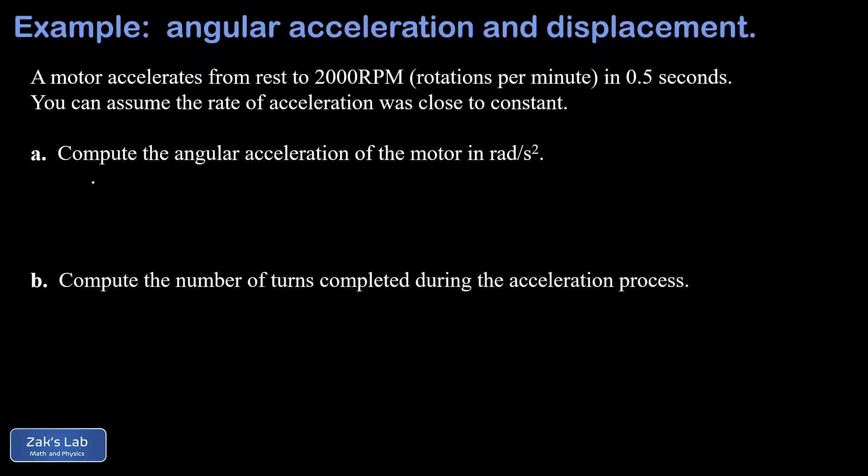We start with the unit analysis. We have 2,000 rotations per minute and we'll work on the angle first. For every one rotation we have 2π radians. Then we work on the minutes. For every minute there are 60 seconds. So we multiply the numerators together and divide by 60. We obtain a final angular velocity of 209.4 radians per second, keeping a little extra precision than usual since we're just at the beginning of the calculation.